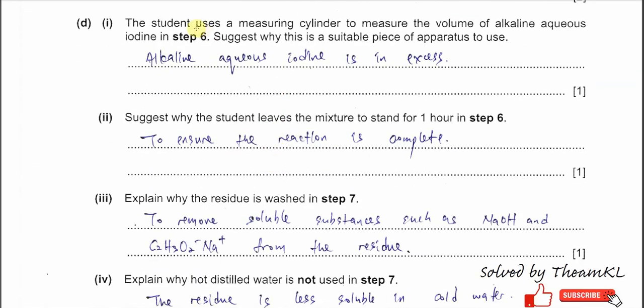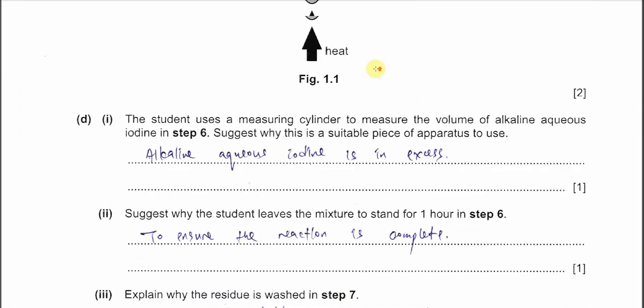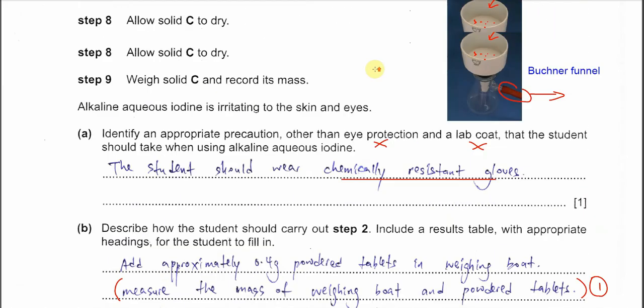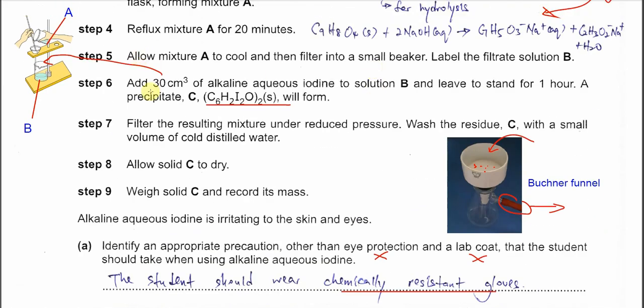Part D1. The student used a measuring cylinder to measure the volume of alkaline aqueous iodine in step 6. Suggest why this is a suitable piece of apparatus to use. There are two reasons. The first one is alkaline aqueous iodine is in excess, because it's 30 cm³. Second, the volume is stated as 30 cm³, it's not 30.00. If 30.00 then we should use a burette. Because it's only 30 cm³, it's good enough for us to use the measuring cylinder.